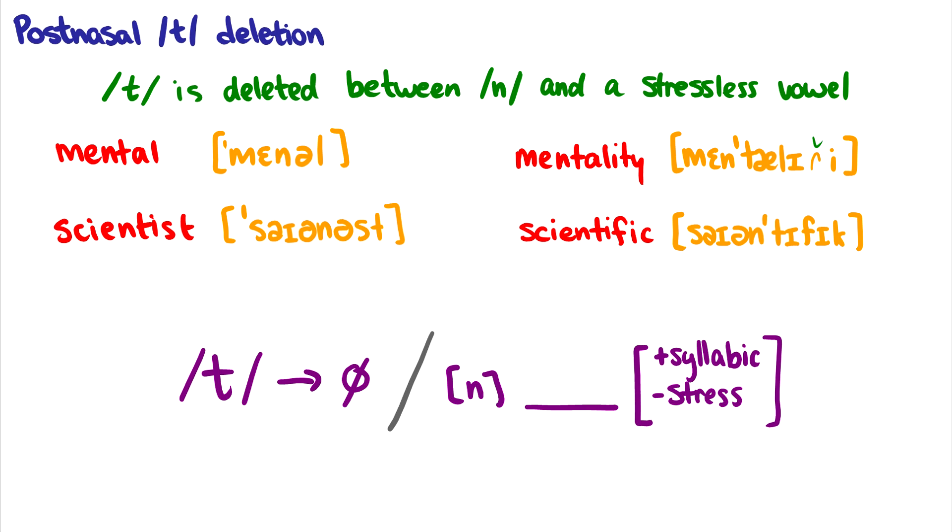Okay, so with those two preliminaries out of the way, let's look at how some people say the word mental. Some people say mental. And instead of scientist, they will say scientist. And even though they may say mental or scientist, they would still say something like mentality or scientific. There's no deletion there. And that's because in mental and scientist,